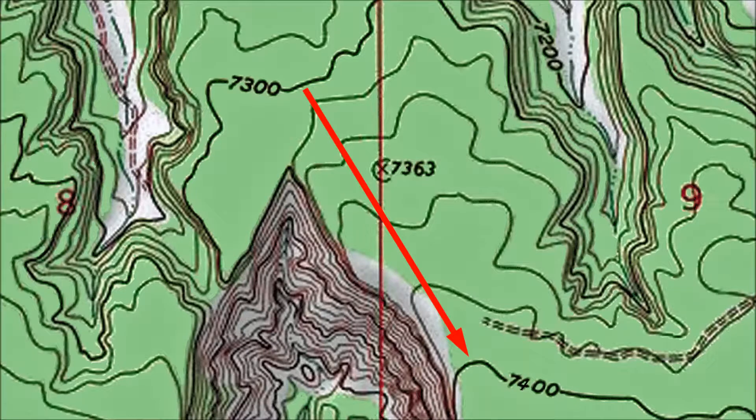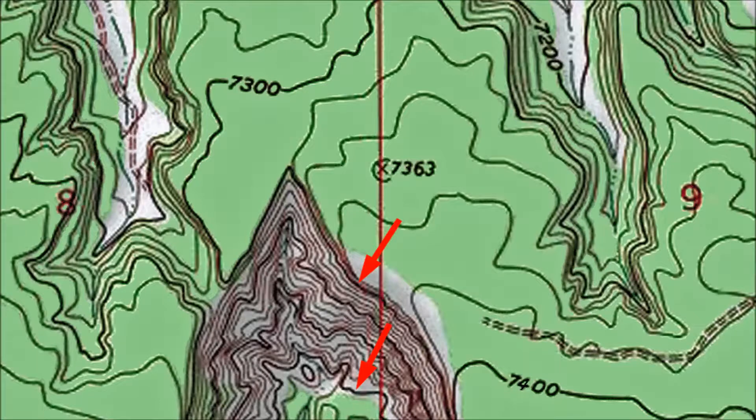Previously we found that if we went from that index contour line to the next higher index contour line we gained 100 feet. So if we scramble down this slope from the upper index contour line to the lower one we're dropping 300 feet.